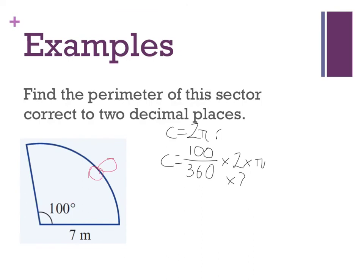I get an answer of 12.217. Why have I done 100 over 360 times 2 times π times 7? Well, the thing is I don't have a full circle. I have part of a circle. I only have 100 of the 360 degrees. So if I do 2 times π times 7 I'm going to get the whole thing, but I only want part of it. That's why I've done this beforehand.